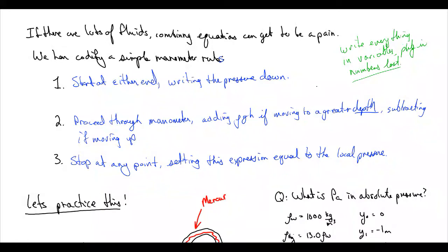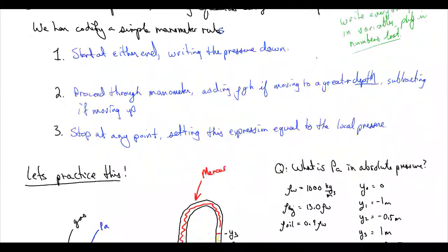So start at either end, writing the pressure down. Rephrase that in your own words. Proceed through the manometer, adding rho g h if moving to a greater depth, if you're moving down and subtracting if moving up. And then stop at any point, setting the expression equal to the local pressure. Check your number of variables. You should only have one unknown. And then you're done.